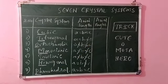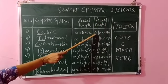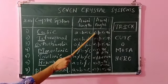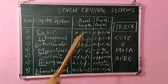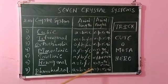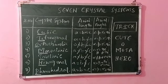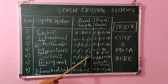Now for axial angles, designated by alpha, beta, and gamma: in the first three systems — cubic, tetragonal, and orthorhombic — all angles are equal to 90°, so alpha = beta = gamma = 90°. In rhombohedral, all angles are not equal to 90°; alpha = beta = gamma but the value is not 90°. In triclinic, it is the most unsymmetrical system — alpha ≠ beta ≠ gamma ≠ 90°.